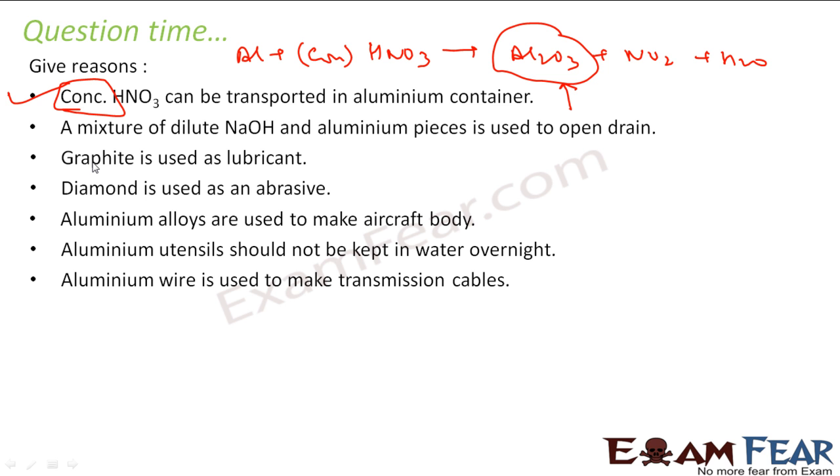A mixture of dilute sodium hydroxide and aluminum pieces is used to open drain, because the moment you react sodium hydroxide and aluminum, it gives good amount of hydrogen gas and the pressure of this hydrogen gas is enough to open the drain. Let me write the reaction here: aluminum reacts with sodium hydroxide and water in the drain, it gives NaAlO2 plus hydrogen gas. This hydrogen gas pressure is enough to open the clogged drain.